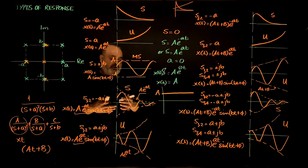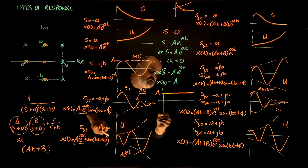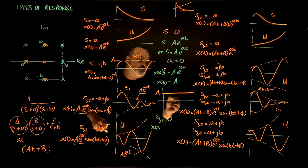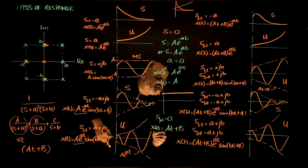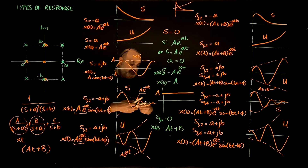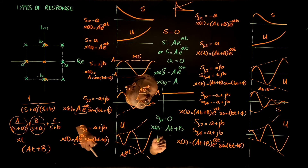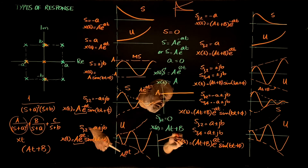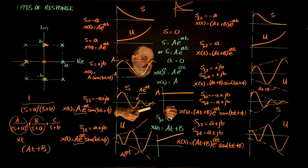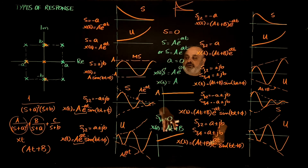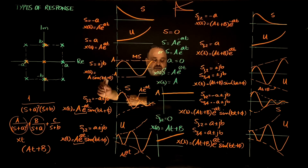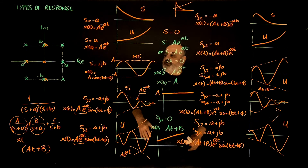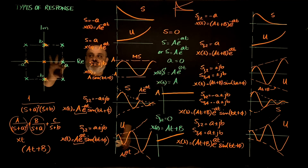What if we repeat the root at zero — s₁,₂ both equal zero? Then instead of x(t) being a constant amplitude a, it becomes a·t plus b — a linearly growing response. This is unstable, but slowly unstable: it grows to larger values over time in a linear fashion. This is a simpler issue than exponentially unstable responses. These cover all possible responses for all possible root locations on the complex plane.